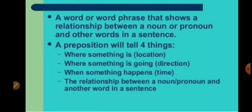A preposition will tell four things. First: where something is — location बताती है कि वो accurate किस place पर है, means इसके अंदर है, बाहर है, बाजू में है, सामने है — in, out, on, into, in front of, behind. तो यह हमें where something is, means उसके location के बारे में बताता है.